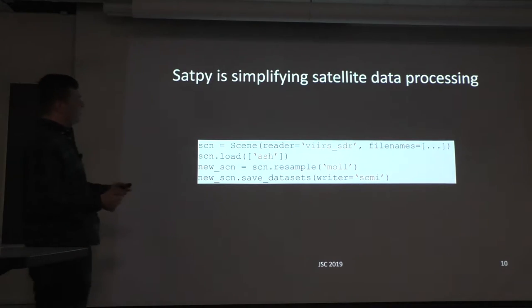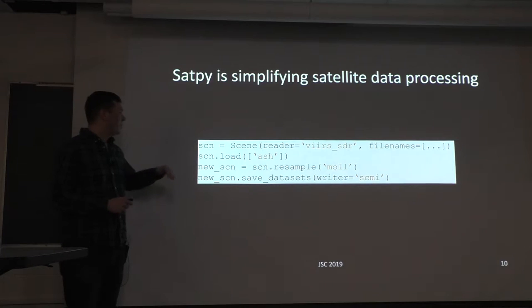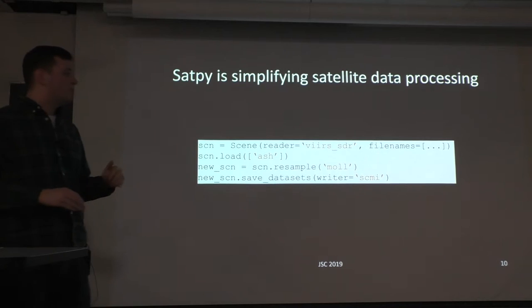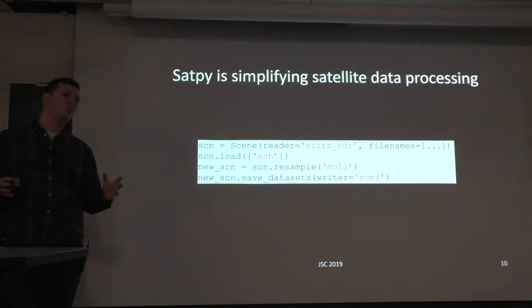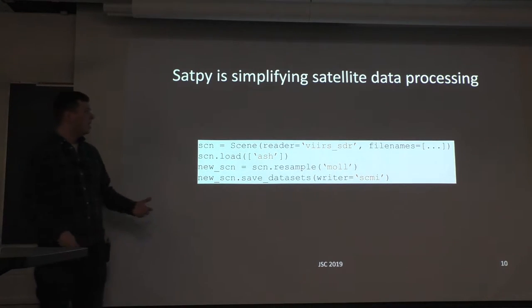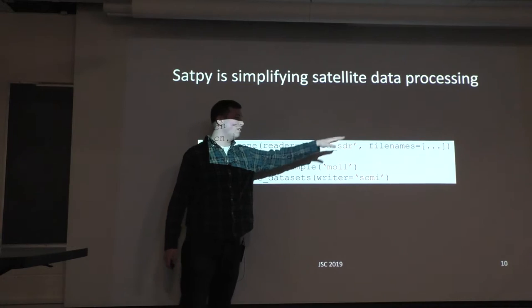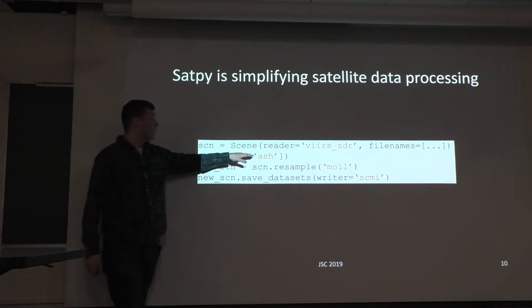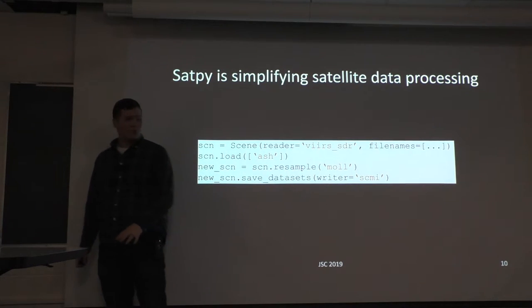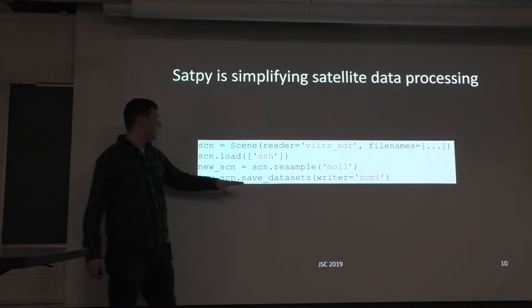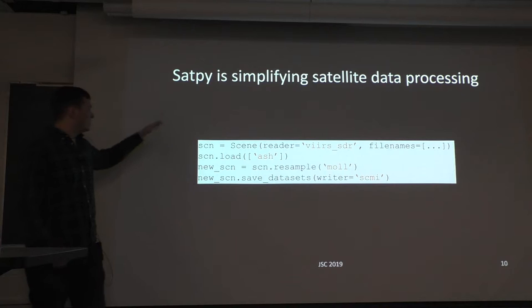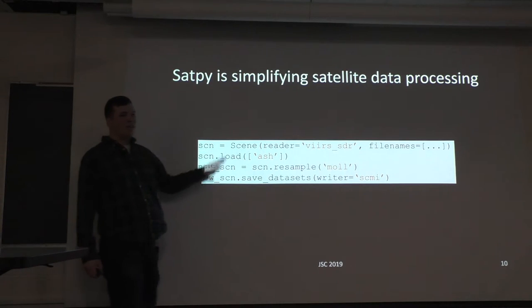To wrap up section one, with just a few lines of Python code where I swap out a few arguments, I'm doing something completely different. Instead of ABI data and individual channels, I'm now taking VIIRS SDR files, making an ASH RGB recipe, resampling to a different projection and resolution, and saving to the SCMI format instead of GeoTIFFs. Same interface, just different parameters.